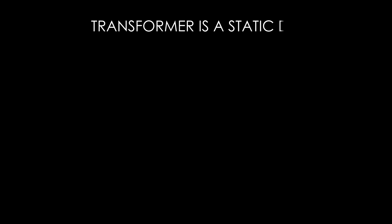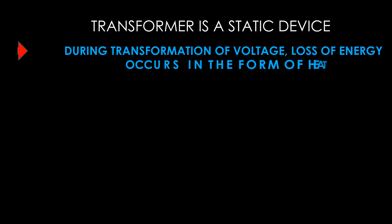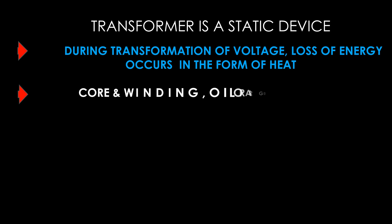We know a transformer is a static device which converts energy at one voltage level to another voltage level. During the process of energy transfer, losses occur in the winding and core. This loss appears as heat. The heat developed in the transformer is dissipated to the surroundings.